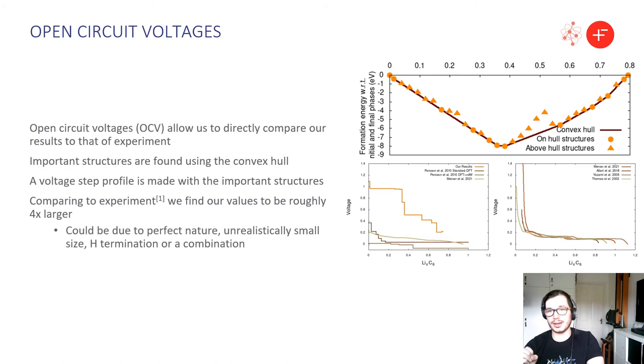This is displayed at the top here where the orange circles represent the structures that lie directly upon the convex hull itself and these are the structures we're going to use to draw a voltage step profile which can be directly compared to the open circuit voltages of experiment.